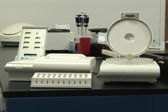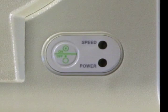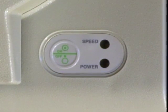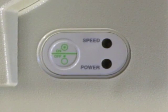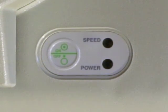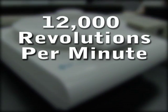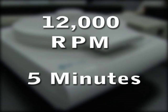Close the lid of the centrifuge. The on-off button is used to start the spin. This button is also used to abort a spin if, for instance, the rotor cover is not secured properly. The centrifuge will operate at 12,000 revolutions per minute, or RPMs, for five minutes.